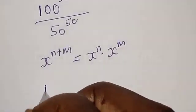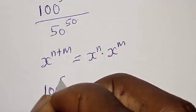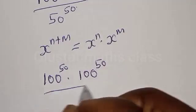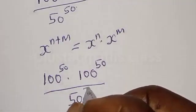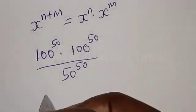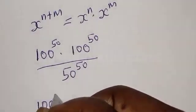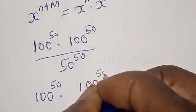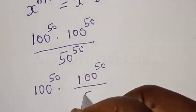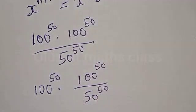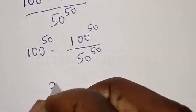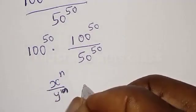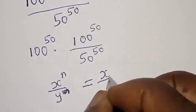Then we have 100 raised to power 50 multiplied by 100 raised to power 50 over 50 raised to power 50. This can be expressed as 100 raised to power 50 multiplied by 100 raised to power 50 divided by 50 raised to power 50. Also remember that if you have S raised to power N divided by Y raised to power N, that is the same thing as S over Y raised to power N.